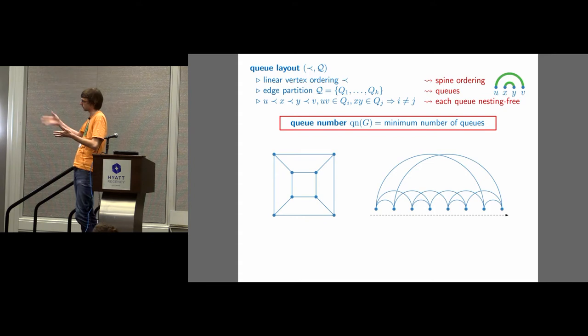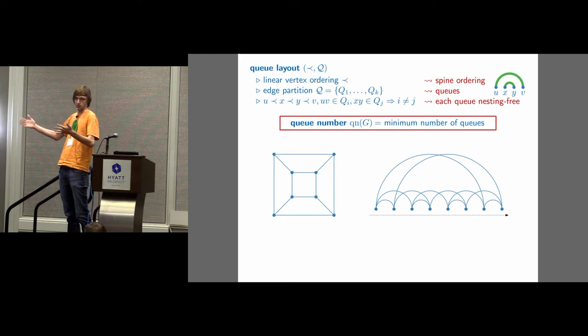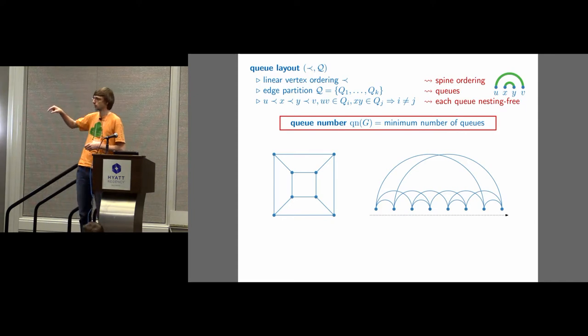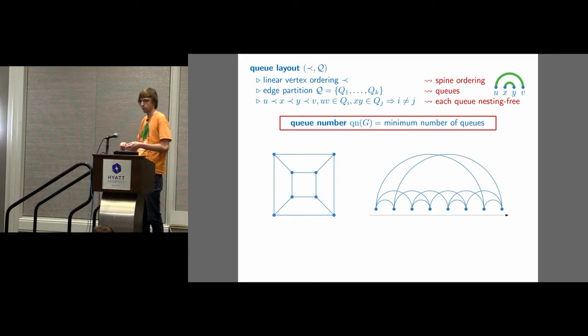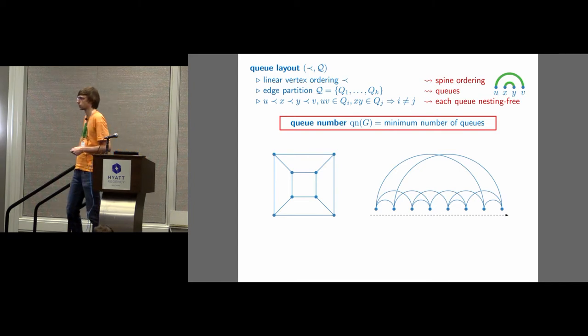So let's jump into the Q business. For the Q number we seek, we're having a graph like the one on the left here, and we seek to order the vertices, this is the spine ordering, and we seek to partition the edges in so-called Qs. The condition that a set of edges is a Q with respect to the spine ordering is that it doesn't contain any pair of nesting edges. So the Q number is the minimum number of Qs you can find for your graph where you minimize over all vertex orderings.